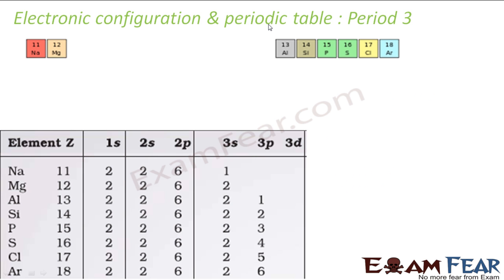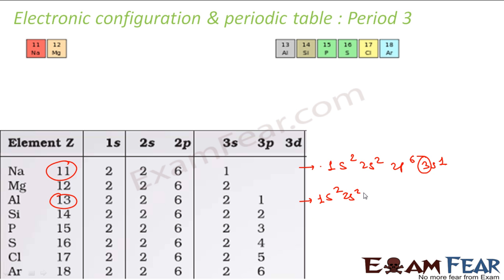Let us take period 3. In period 3, the maximum value of n is 3. For example, sodium — atomic number 11 — has configuration 1s2, 2s2, 2p6, 3s1, so maximum value of n is 3. For aluminium, configuration is 1s2, 2s2, 2p6, 3s2, 3p1 — maximum value of n is 3. Period 3 also has 8 elements.